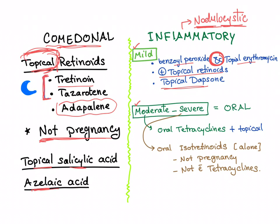For moderate to severe acne, we use oral agents, starting with oral tetracyclines — such as doxycycline, tetracycline, or minocycline — plus the previous topical therapy. Be aware that Propionibacterium acnes can develop resistance to erythromycin; in such cases, trimethoprim-sulfamethoxazole (TMP-SMX) is used instead.